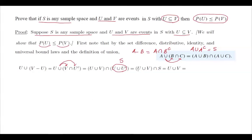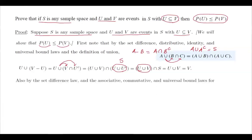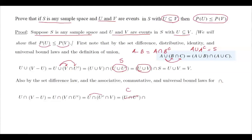U and V are subsets of S, included in the larger set, so their intersection with S equals U union V. Since U is a subset of V, the union U union V equals the larger set V. So we have shown that U union (V minus U) equals V. Now expanding V intersection the complement of U, we can group U intersection the complement of U, which gives the empty set. Empty set intersected with V is also empty.